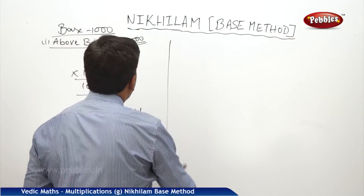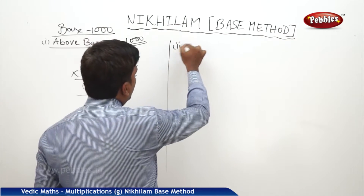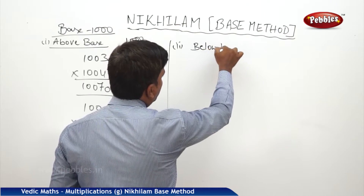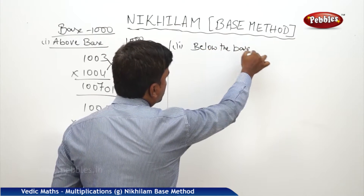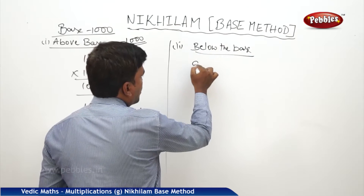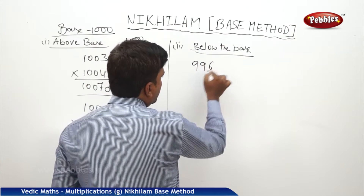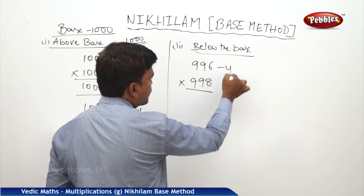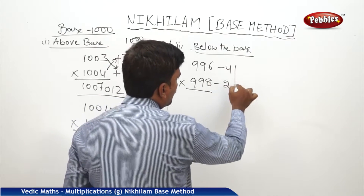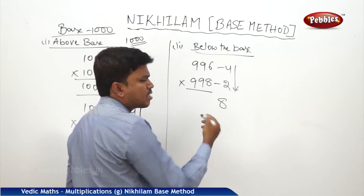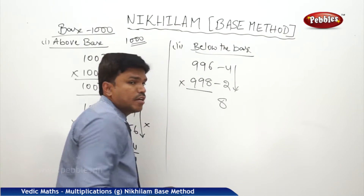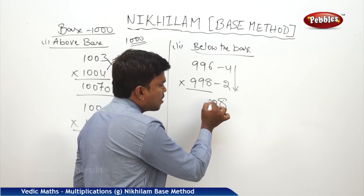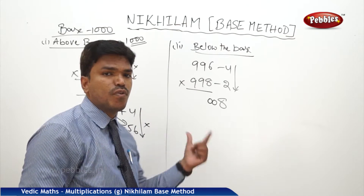Now we will see Case 2 — below the base. Let us take the examples 996 into 998. So this is minus 4 and this is minus 2. 4 twos are 8. Minus into minus is anyway plus. But how many digits should be there? Three digits.